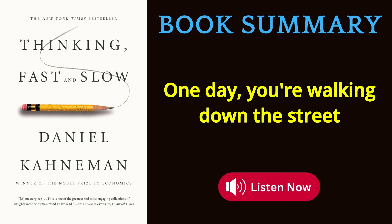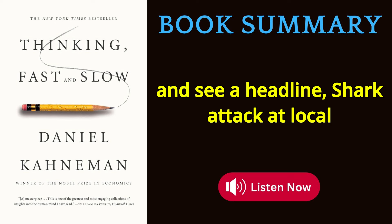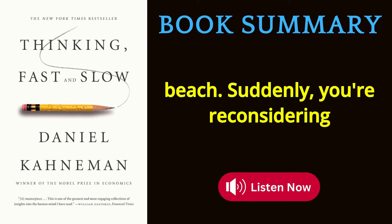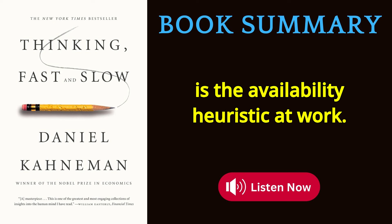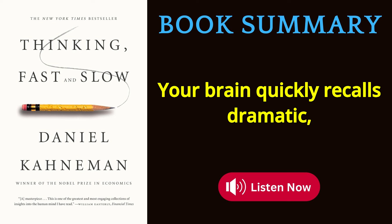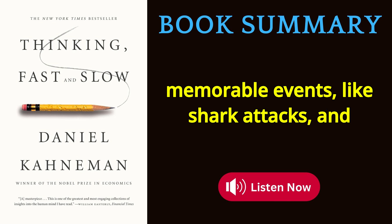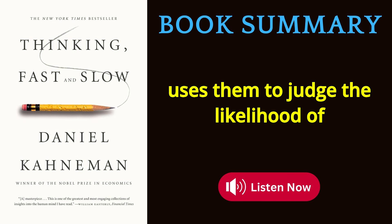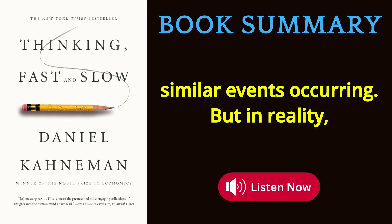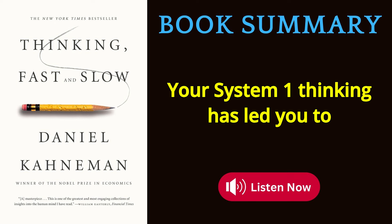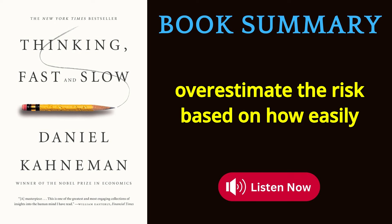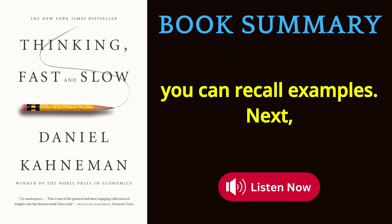One day, you see a headline — 'Shark Attack at Local Beach' — and suddenly reconsider your weekend plans to go swimming. This is the availability heuristic at work. Your brain quickly recalls dramatic, memorable events like shark attacks and uses them to judge the likelihood of similar events occurring. But in reality, shark attacks are extremely rare. Your System 1 thinking has led you to overestimate the risk based on how easily you can recall examples.